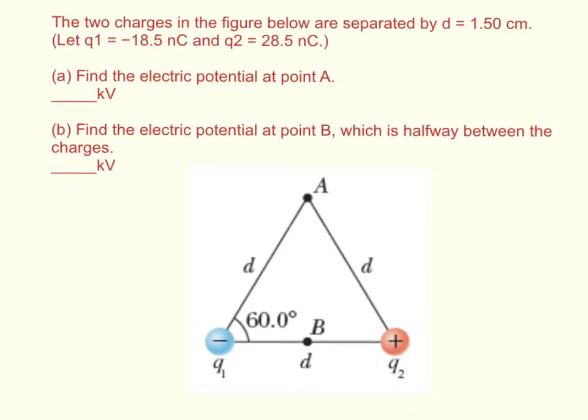Okay, so the general equation for electric potential is the electric potential V is equal to Ke, which is Coulomb's constant, times Q over R.